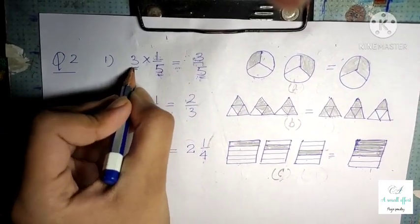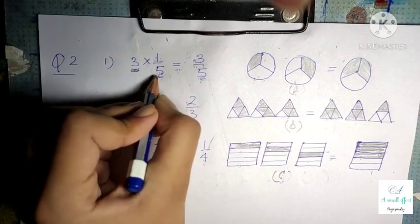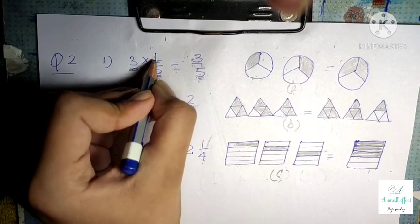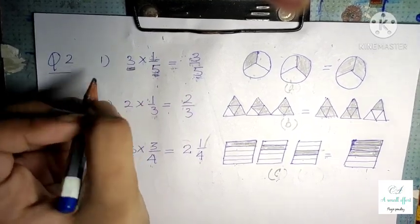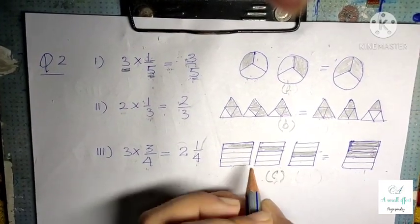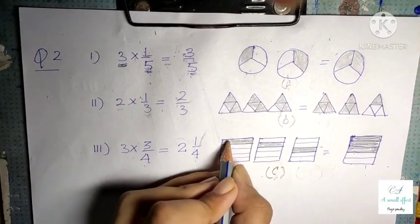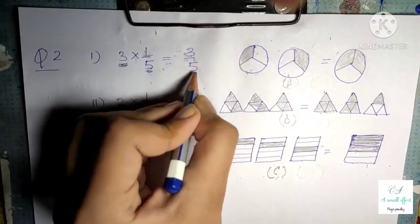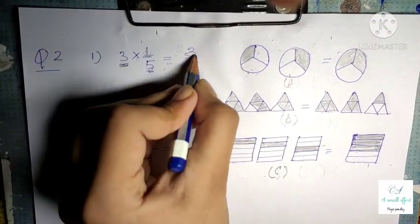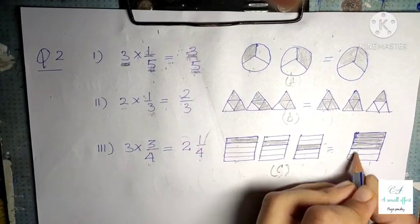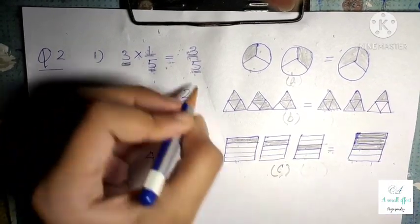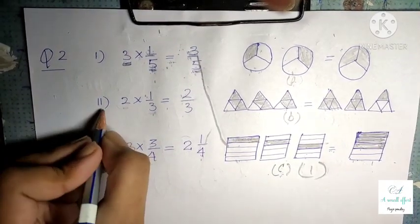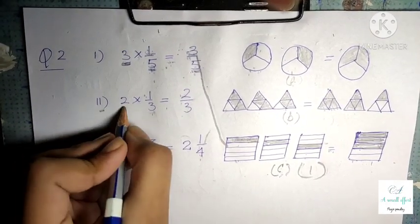For 3 × 1/5 = 3/5, there should be 3 figures, 5 is the denominator so 5 parts should be there, and 1 is the numerator so 1 part should be shaded. In option C we can see there are 3 figures, 5 parts are there, and 1 part is shaded. So the first part is matched with option C.